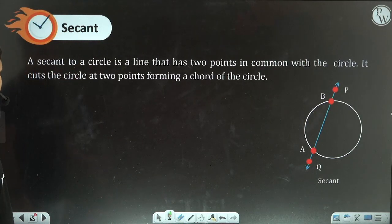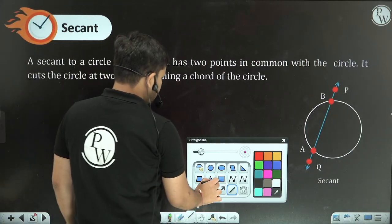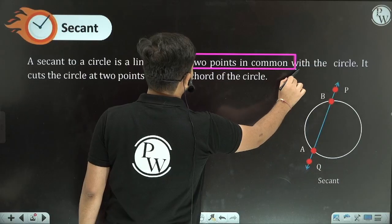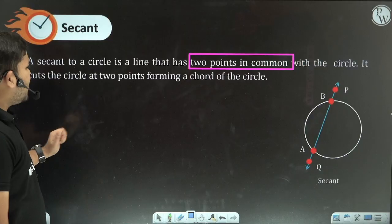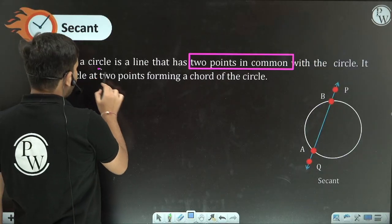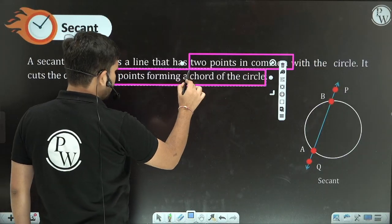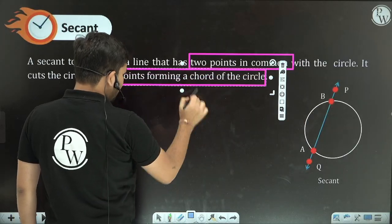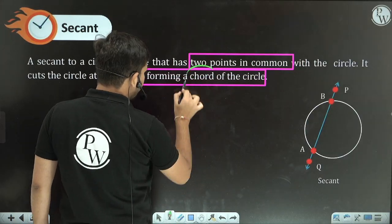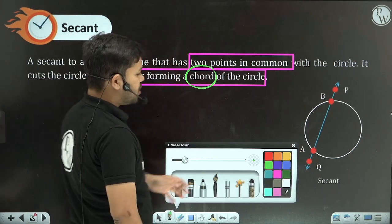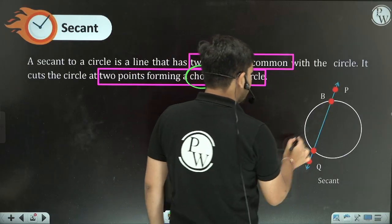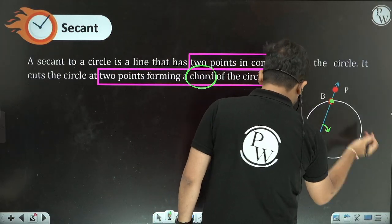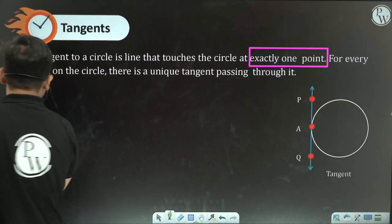The second definition: a secant to a circle is a line that intersects the circle at two common points. It cuts the circle at two points, forming what is called a chord of the circle.